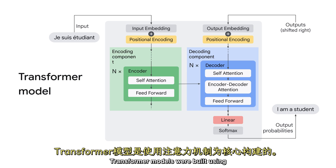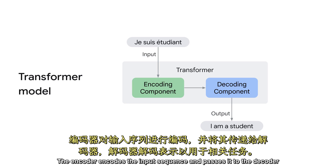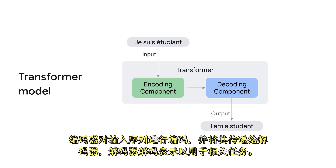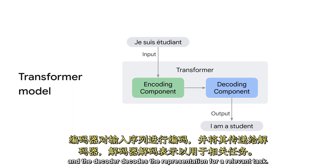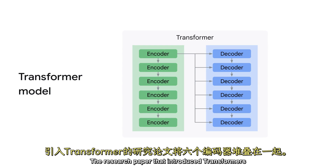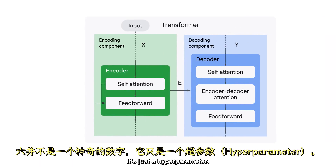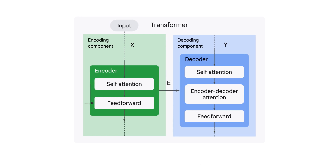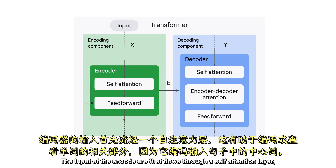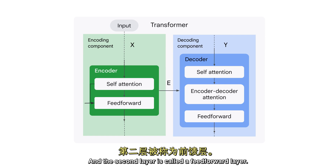Transformer models were built using attention mechanisms at the core. A transformer model consists of encoder and decoder. The encoder encodes the input sequence and passes it to the decoder, and the decoder decodes the representation for a relevant task. The encoding component is a stack of encoders of the same number. The research paper that introduced transformers stacks six encoders on top of each other. Six is not a magical number — it's just a hyperparameter. The encoders are all identical in structure, but with different weights. Each encoder can be broken down into two sub-layers. The first layer is called the self-attention. The input of the encoder first flows through a self-attention layer, which helps the encoder look at relevant parts of the words as it encodes a center word in the input sentence.